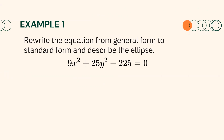The first thing that we need to do is to write the equation in standard form. To do that, we need to isolate first the constant term to the right side of the equation. So we will have 9x squared plus 25y squared equals 225.